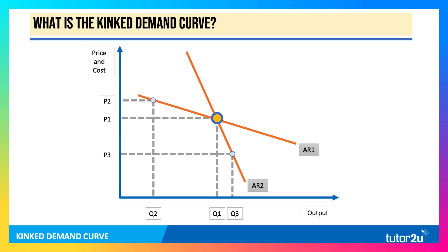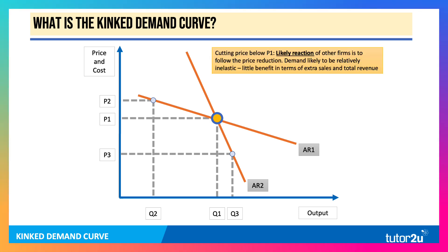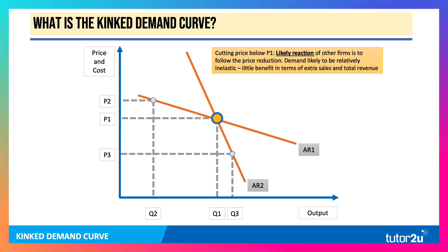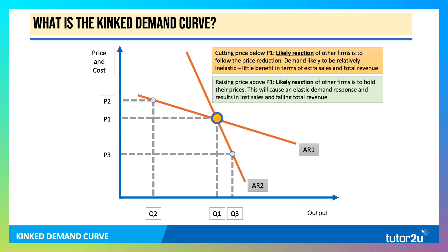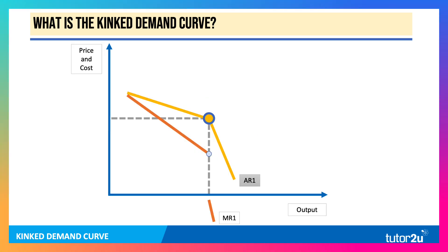Here's the initial idea of the kinked demand curve. There are two demand curves, AR1 and AR2. Depending on the likely reaction: if you cut price below P1, the likely reaction of other firms is to follow the price reduction, giving a price inelastic demand curve. Raising price above P1, the assumed reaction is for other firms to hold their prices, causing a price elastic demand curve. You end up with a kinked demand curve shown in yellow.